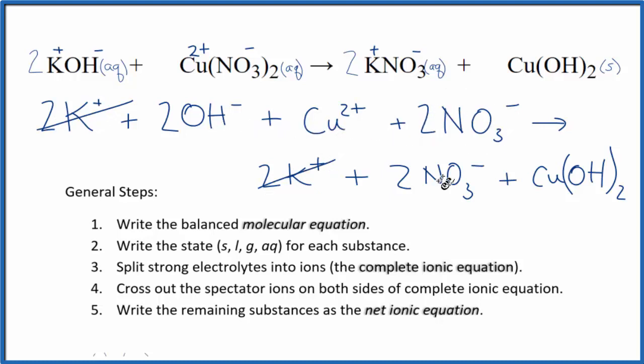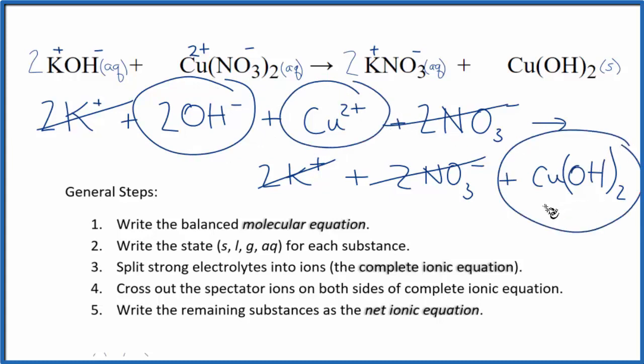Here's 2 nitrates. 2 nitrates. Cross them out. But everything that's left, that's the net ionic equation. So we have these 2 hydroxide ions, copper 2 ion, and then we get the copper 2 hydroxide.